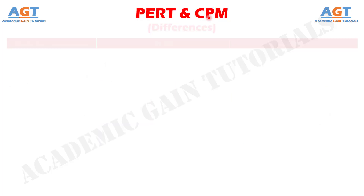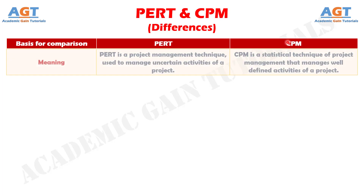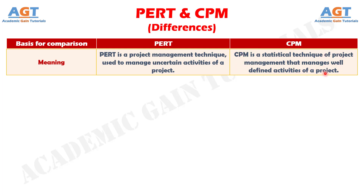Let's look into the basic differences between PERT and CPM in a tabular form. Difference number 1: PERT is a project management technique whereby planning, scheduling, organizing, coordinating, and controlling uncertain activities are done. Whereas CPM is a statistical technique of project management in which planning, scheduling, organizing, coordination, and control of well-defined activities take place.